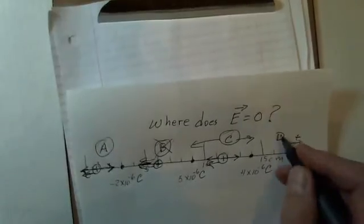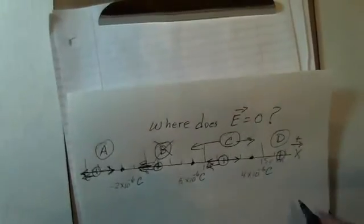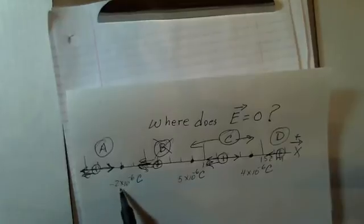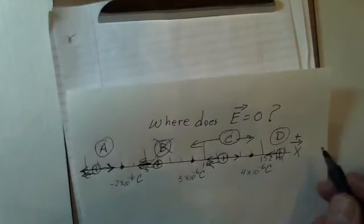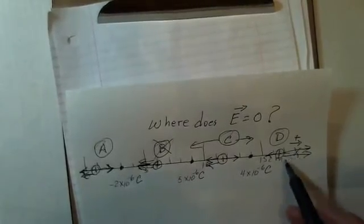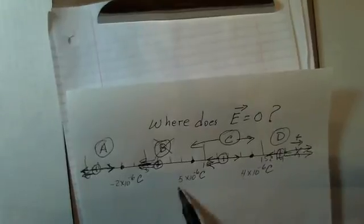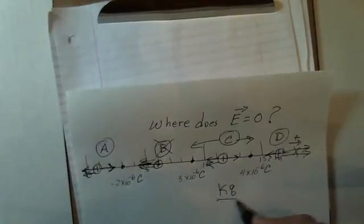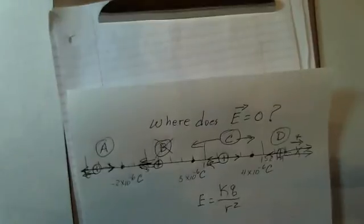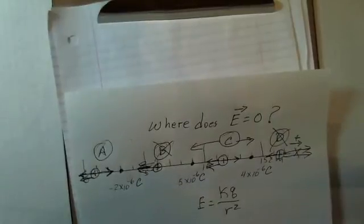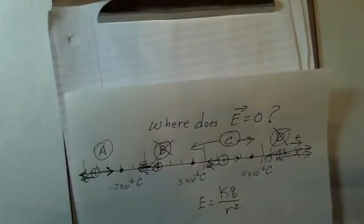What about region D? If I put some positive test charge out here, we're going to have a small electric field due to the minus 2 charge. The 5 and the 4 create electric field to the right, and they're going to be long arrows with big values because they're larger charges and we're closer. Remembering KQ over R squared is how we calculate electric field magnitude, these arrows are going to dominate. It's not possible to add up to 0 there. So let's go ahead and try to find the place where the electric field does equal 0.